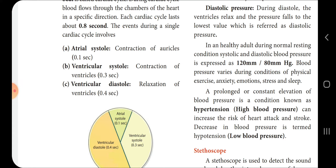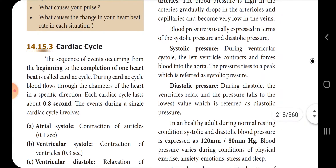What is single circulation? In some animals, oxygenated and deoxygenated blood are mixed and pass through the heart only once. This type of circulation is called single circulation.